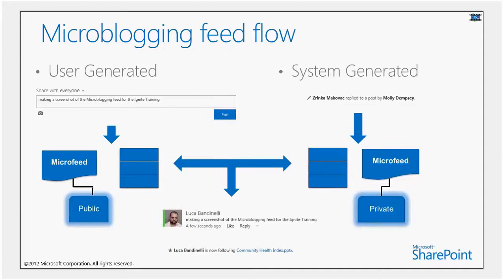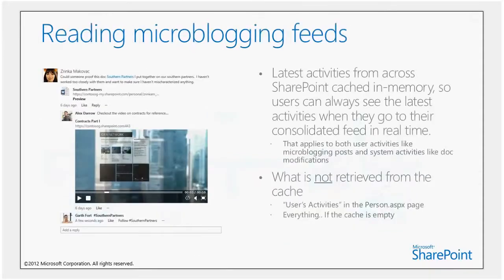All of this microblogging information comes from the distributed cache service, with the exception of user activities in About Me. By virtue of being cached, users can always see their latest activities when they go to their feed in their My Site. We also have a site feed — we don't have to talk to the whole company. I can post a question specifically to the marketing site, and only the members of that site will be privy to that discussion. This gives me a way to scope my conversations.